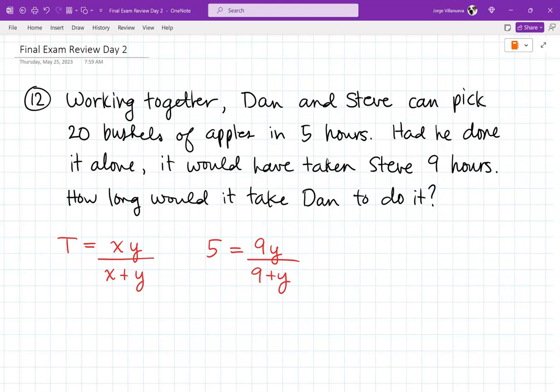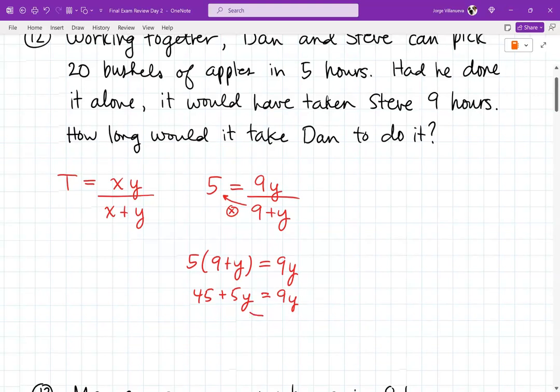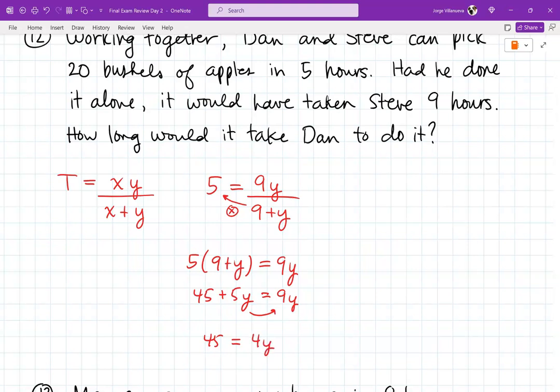At this point, you're going to do some multiplication. You got to try to get that denominator out of the way. We're going to multiply this over. So it becomes 5 times (9 + y) equals 9y. We'll multiply it out on the left side. We get 45 + 5y equals 9y. We'll subtract 5y over to the right side. So I get 45 equals 4y.